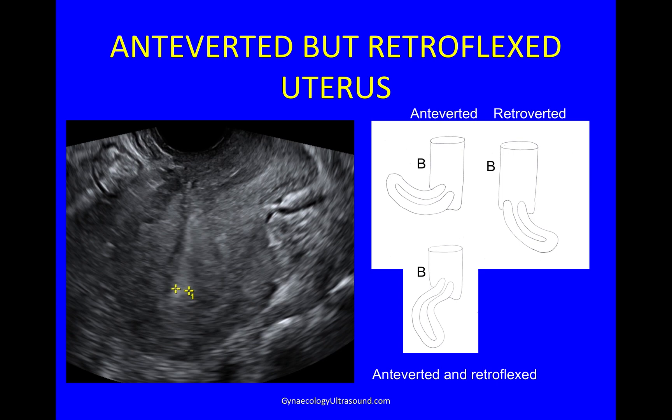The first thing I look for is what position the uterus is in. Here you can see an anteverted uterus where the uterus tilts toward the bladder, or a retroverted uterus where it tips backwards away from the bladder. But in endometriosis, you often see a uterus that is anteverted but retroflexed, as the fundus of the uterus is pulled backwards by adhesions.